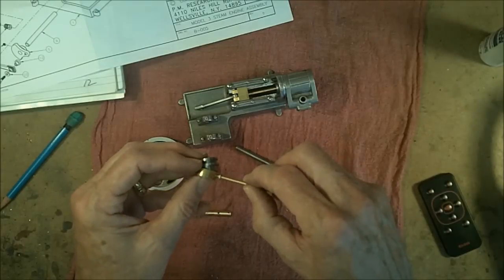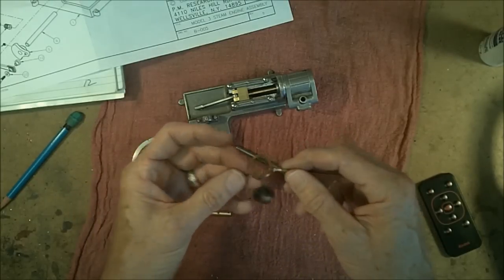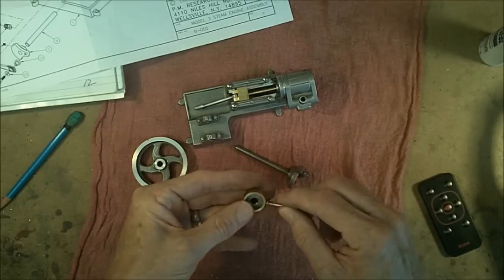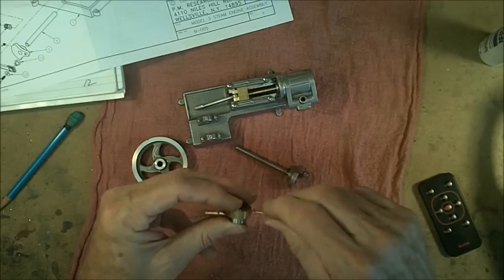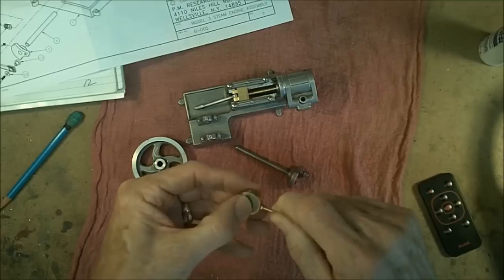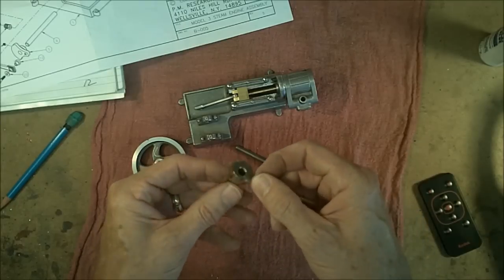But first, it goes in here, screws in, then the eccentric goes over the hub like so, and that will go in, and of course you adjust it, I'll adjust it with that.